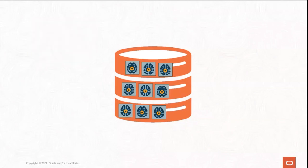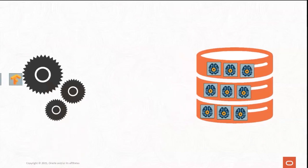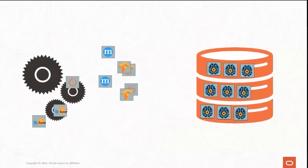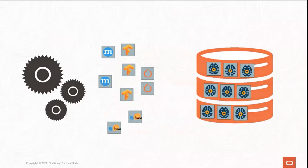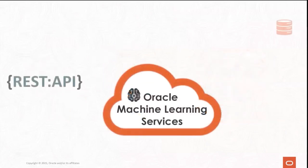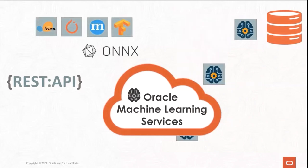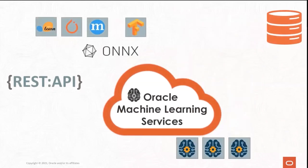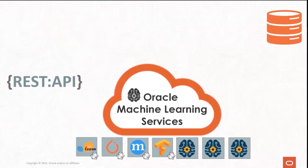You not only have in-database models, you also have models from TensorFlow, MXNet, PyTorch, and scikit-learn built using third-party engines. So you have a lot of models. How do you manage them? Can you deploy them to applications using a common framework? Using REST endpoints, Oracle Machine Learning Services makes it easy to manage and deploy your in-database models and third-party ONNX format models from a single cloud service for ease of application integration.